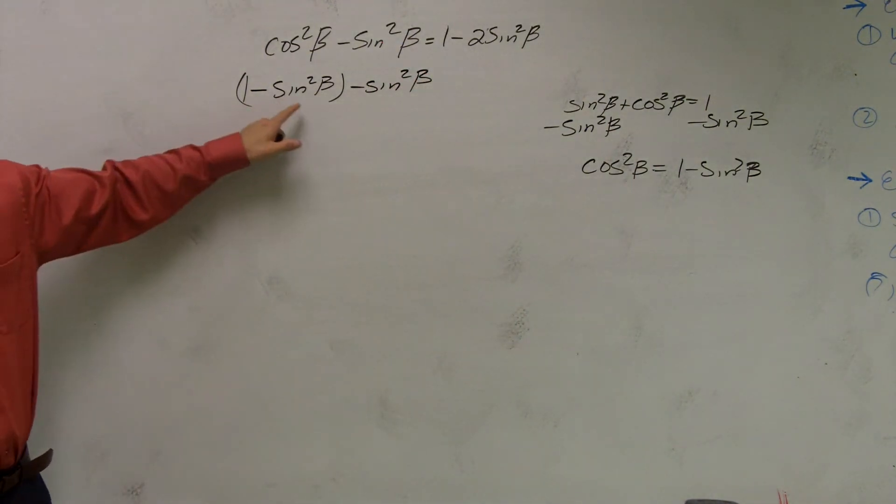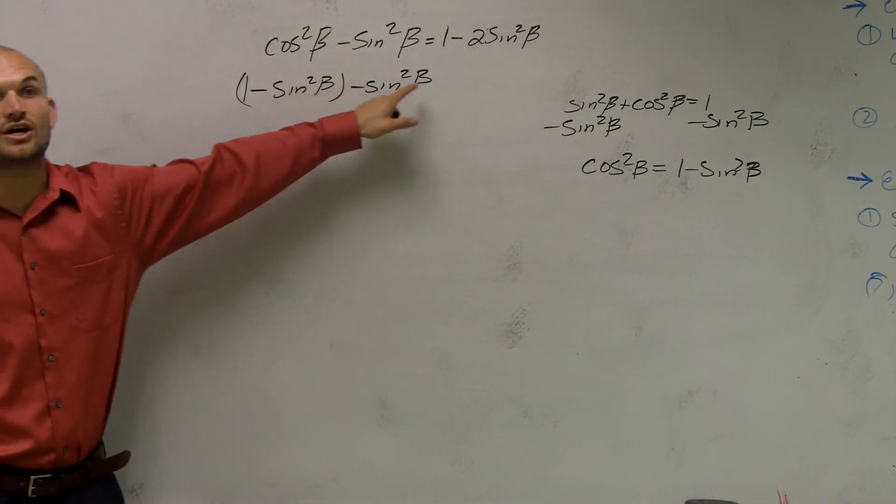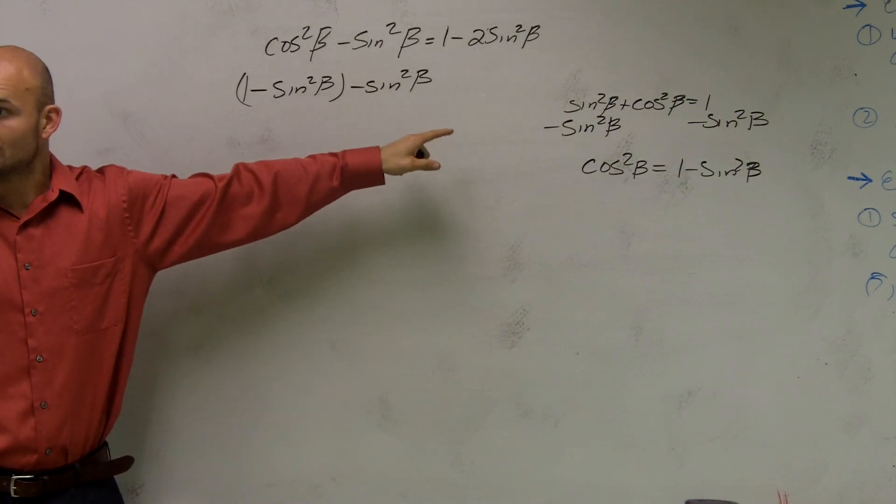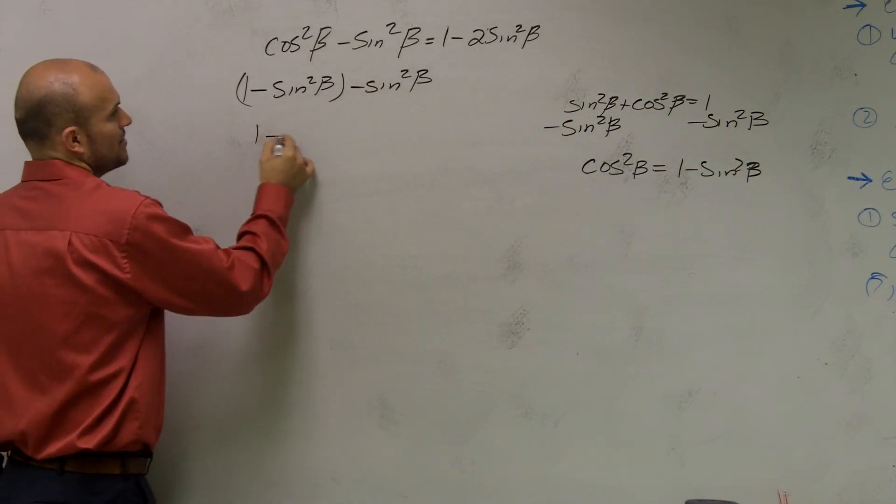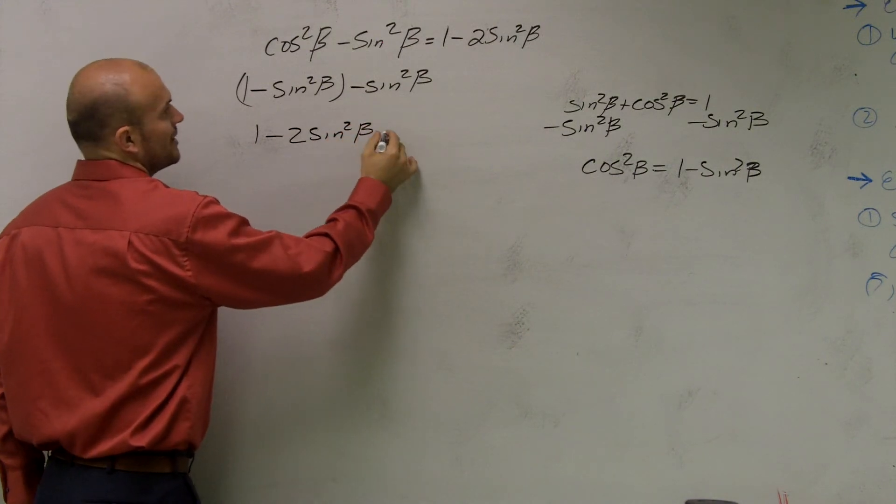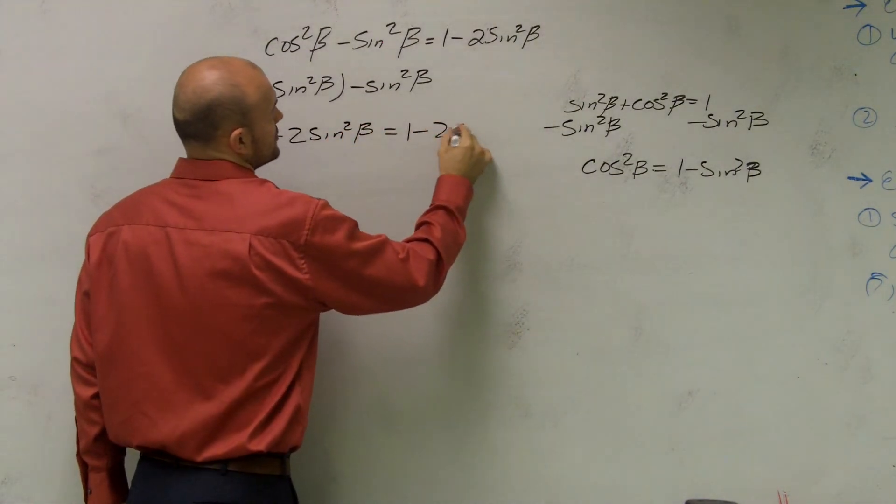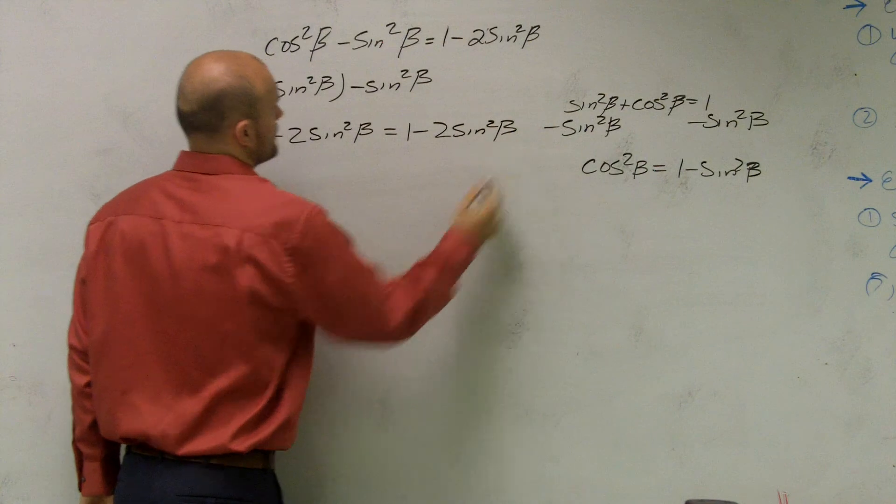Well, a negative sine squared beta minus another sine squared beta is going to equal minus 2 sine squared beta. So I have 1 minus 2 sine squared beta equals 1 minus 2 sine squared beta.